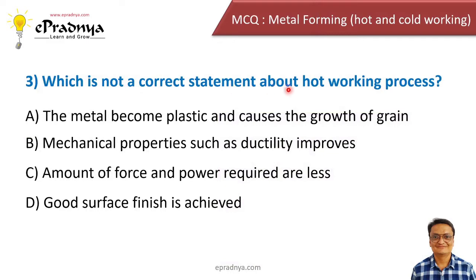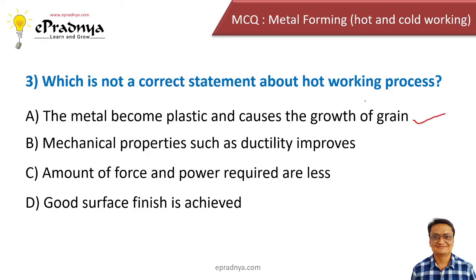Third MCQ: Which is not a correct statement about the hot working process? The four options are: the metal becomes plastic and causes growth of grain — this is correct; mechanical properties such as ductility improve — also correct; amount of force and power required are less — correct, as hot working requires less force than cold working; and good surface finish is achieved — this is not true. In hot working you do not get a good surface finish, which is one of its disadvantages. So the answer is 'good surface finish is achieved.'